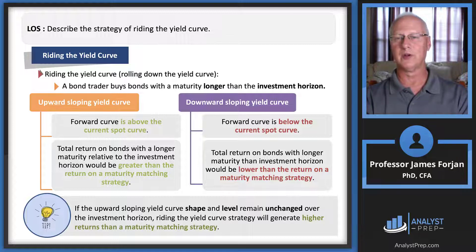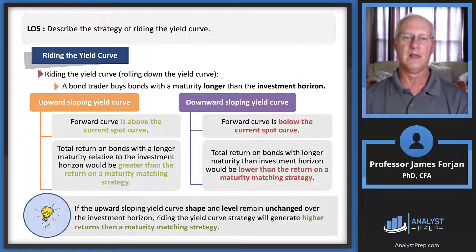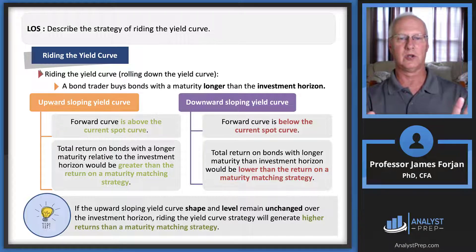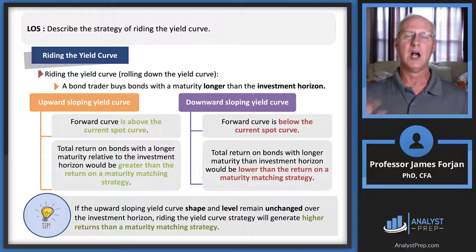With an upward sloping yield curve, the forward curve is above the spot curve. The total return on bonds with a maturity longer than the investment horizon would be greater than the return on a matching maturity strategy. The opposite holds for a downward sloping yield curve, where the forward curve is below the spot curve. The strategy of riding the yield curve tries to take advantage of the difference in slopes between the spot and the forward curve.